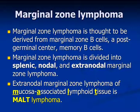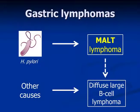Marginal zone lymphoma is thought to be derived from marginal zone B-cells or post-germinal center memory B-cells. Marginal zone lymphoma is divided into splenic, nodal, and extranodal marginal zone lymphoma. Extranodal marginal zone lymphoma of mucosa-associated lymphoid tissue is MALT lymphoma. Common gastric lymphomas are MALT lymphoma and diffuse large B-cell lymphoma. MALT lymphoma is caused by H. pylori infection, and diffuse large B-cell lymphoma is usually caused by other factors such as genetic mutations. However, some diffuse large B-cell lymphomas are developed from MALT lymphoma by lymphoma cell transformation.